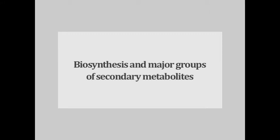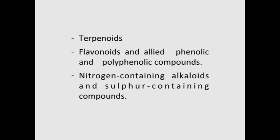Let us now learn about the biosynthesis and major groups of secondary metabolites. Plant secondary metabolites can be divided into three major groups based on their biosynthetic origins: the first is terpenoids, second is flavonoids and allied phenolic and polyphenolic compounds, and the third group are the nitrogen-containing alkaloids and sulfur-containing compounds. The biosynthetic pathways derive mostly from precursor compounds of primary metabolism including compounds derived from protein or amino acids, carbohydrates or sugars, and lipid or fatty acid metabolism.